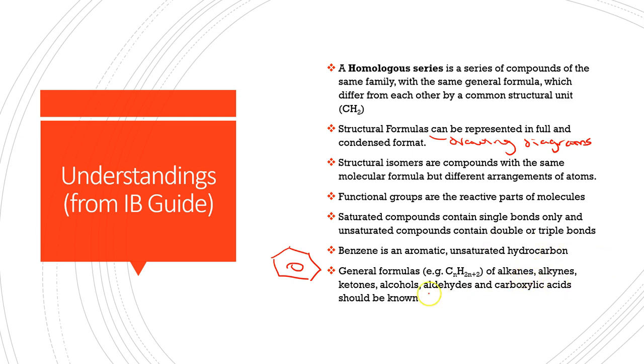The families include alkanes, alkynes, ketones, alcohols, aldehydes, and carboxylic acids. This is for SL — there is even more for HL.